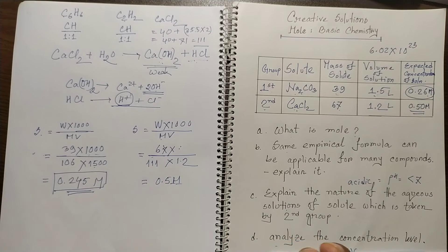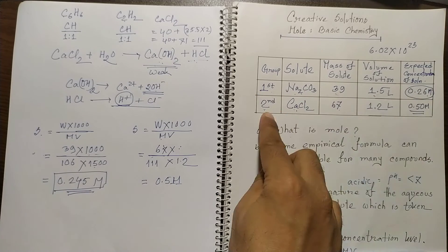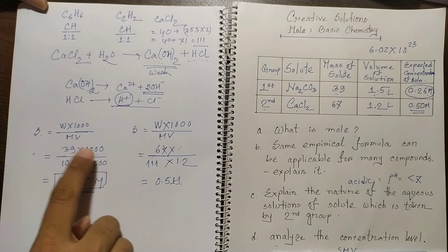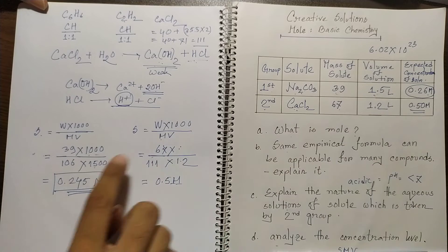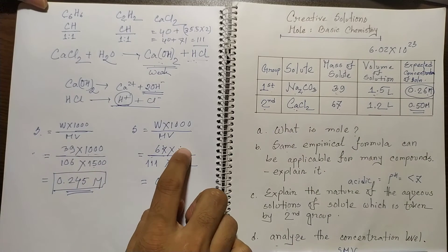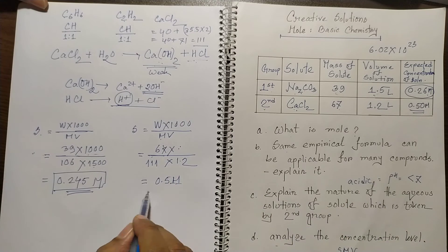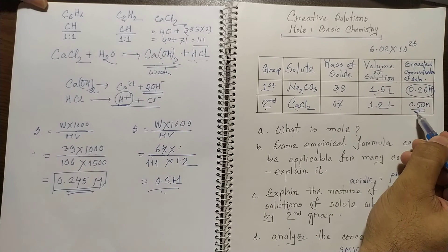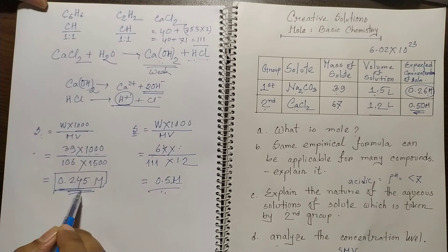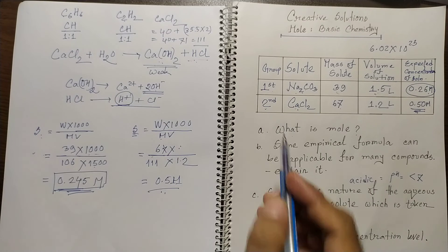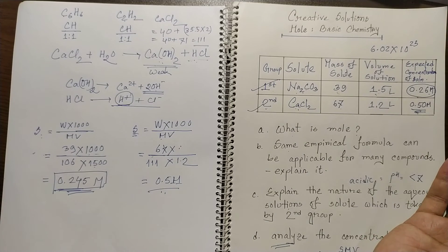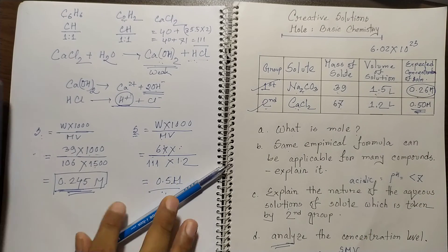When this type of creative question comes from this chapter, you must try to answer it properly. Note that we use 1000 in the formula when the volume is given in milliliters, but here volume was given in liters so we did not use 1000. The second solute met the expected molarity of 0.5 molar, but the first solute did not meet its expected concentration. So analyzing the concentration level: the first group did not meet the expected concentration, but the second group did.